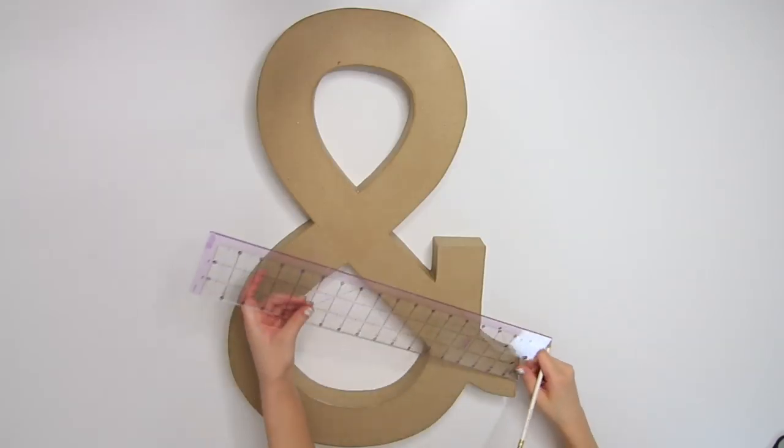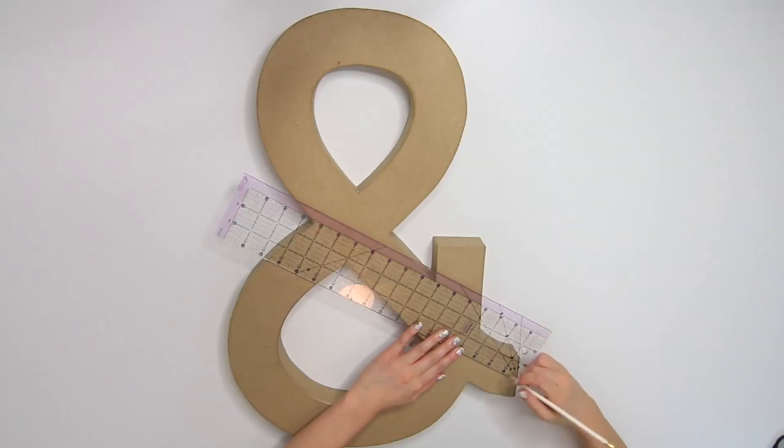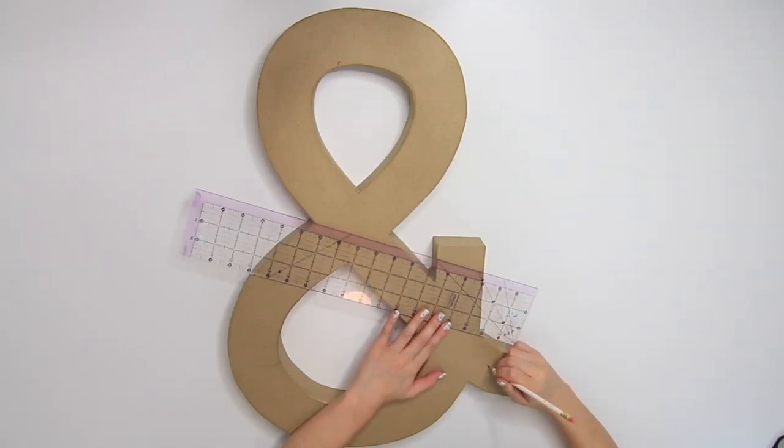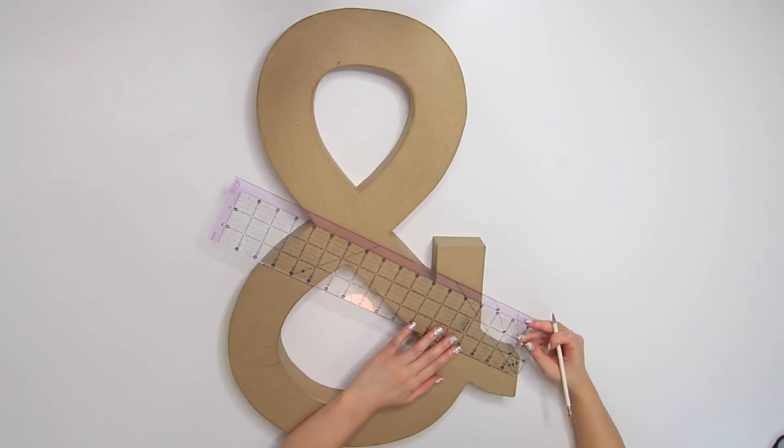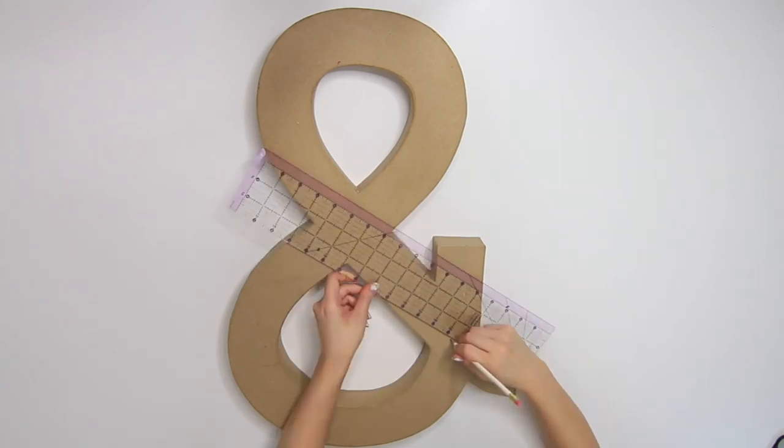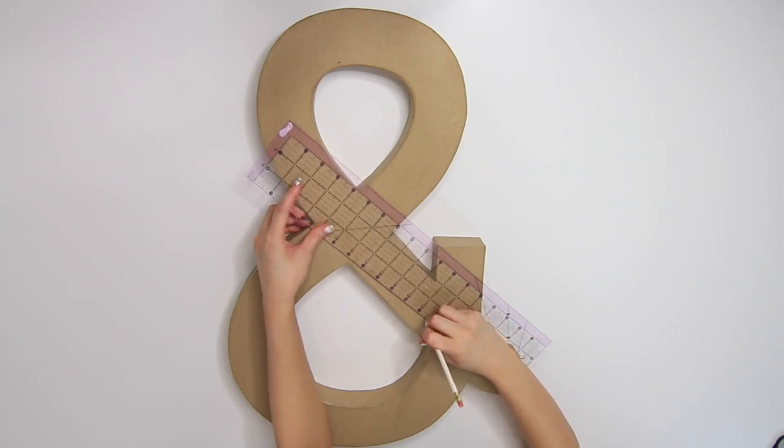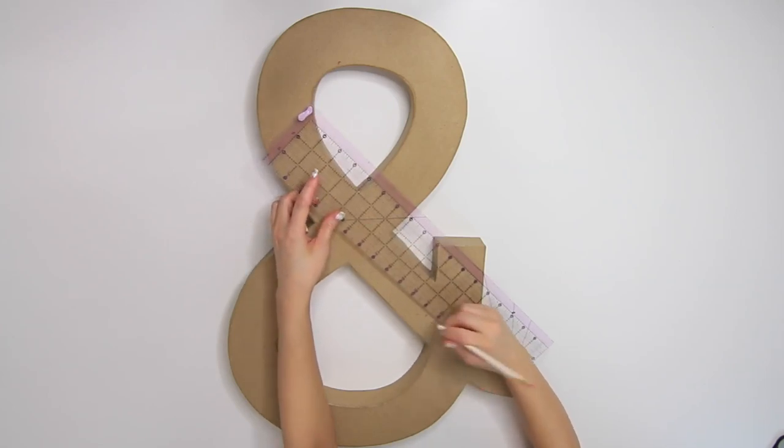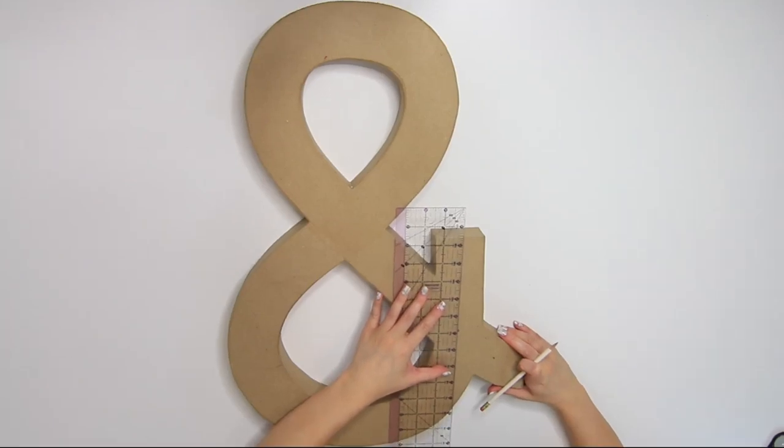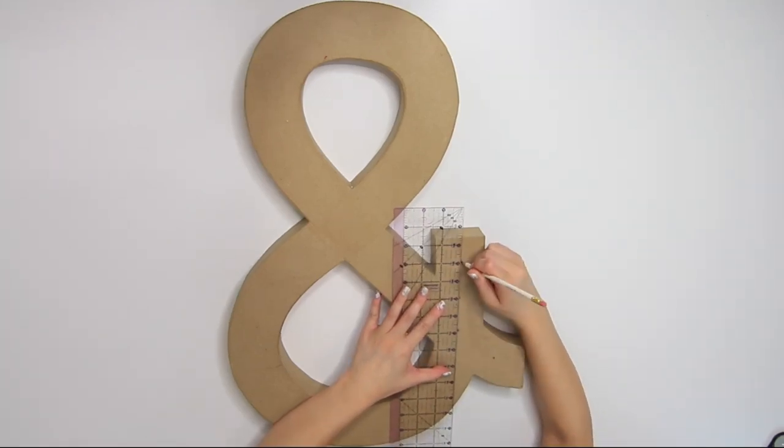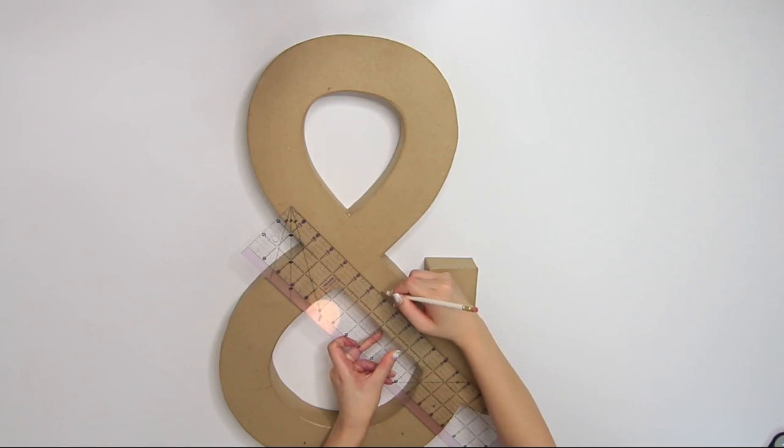With a straight edge ruler, I needed to know where my lights will be on my ampersand. Try to space out evenly in the middle the best you can with your letter or symbol by the number of light bulbs. I purchased a 25 globe string of lights, so I spaced it out about 2-3 inches apart, since this symbol isn't symmetrical like the letter A.